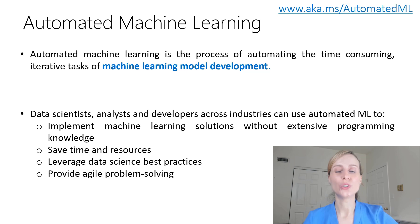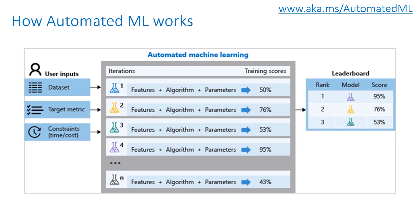Now let's have a closer look at the different automated machine learning capabilities. First of all, with automated machine learning you need to identify the machine learning problem that you want to solve — this can be classification, forecasting, or regression. Then you have to specify the source and the format of the labeled training data, such as NumPy arrays or a Pandas data frame.